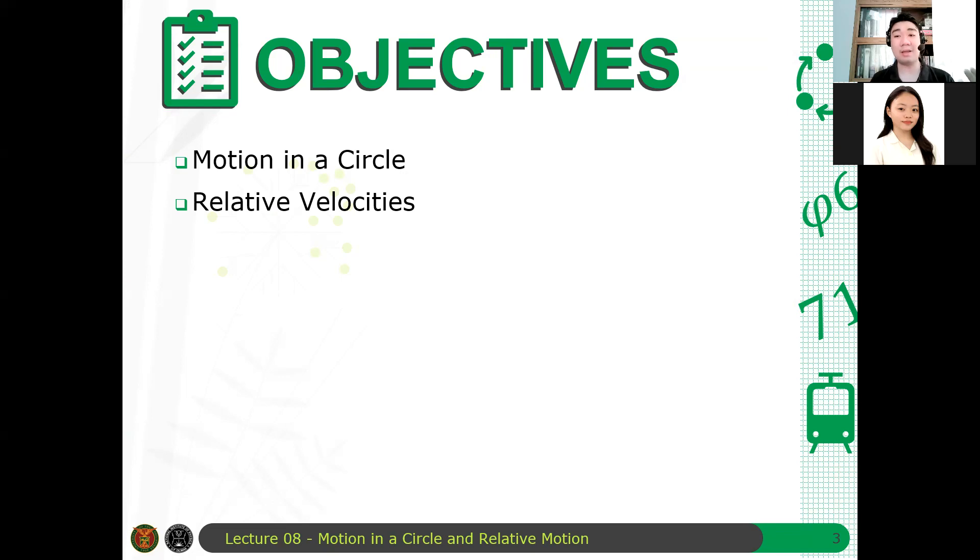And then also, we discuss relative velocities. As a consequence of motion being relative, depending on the frame of reference or on the coordinate system, frame of reference and coordinate system, they are synonymous. Depende dun sa frame of reference mo, iba yung magiging representation of velocity ng isang object. So we will see here that they're both acceptable, they're both valid, again, because of the notion that motion is relative.